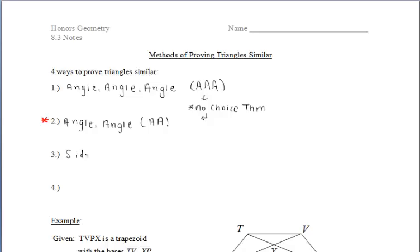The third way is by side-side-side similarity, which means that if the ratios of the measures of the corresponding sides of the triangles are equal, then the triangles are similar.